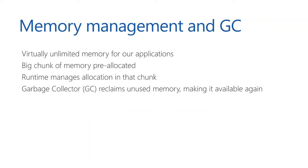Memory management and the garbage collector is one of the key features in .NET, because it gives you virtually unlimited memory in your applications. You don't have to think about allocating and deallocating memory — you simply assign a value to a variable and don't care afterwards, because the garbage collector cleans it up. .NET allocates a big chunk of memory when the application starts, manages that block itself, and the GC comes around periodically to reclaim unused memory and make it available again.